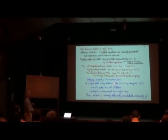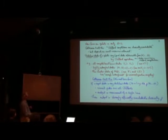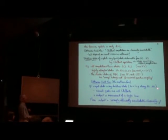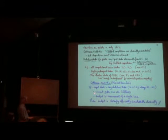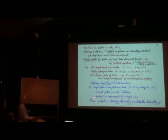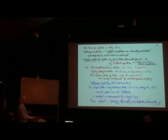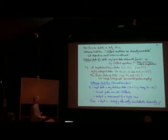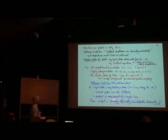The Gottesman-Knill theorem in its most basic form is: if the input state is a stabilizer state, the circuit is all Cliffords, and the output is a measurement of a single line, then it's strongly efficiently classically simulatable.